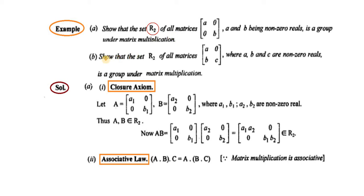Iska second part mein, show that the set R2 of all matrices A, 0, B, C, where A, B and C are non-zero reals, is a group under matrix multiplication. So in Part B, hamare paas R2 hai. Dono mein kya fark hai? R2 mein sirf diagonal matrices hai, aur yahan hamare paas non-zero elements hai. This is a lower triangular matrix.